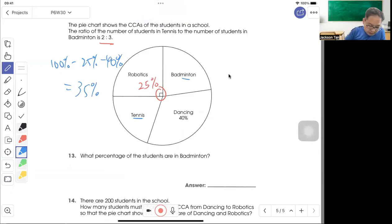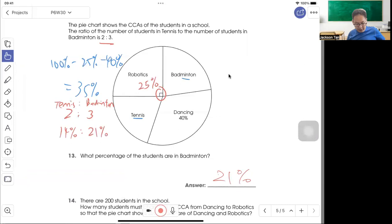So we mentioned that it's 2 to 3. So we can divide by 5, 7% times 2, so we get 14%. So 35 divided by 5 is 7, 7 times 3 is 21%. Okay, so we got the percentage. So badminton is 21%.